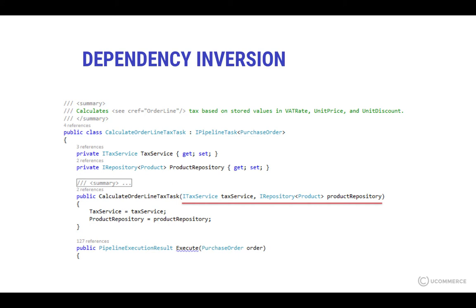We're using constructor injection to get that component into another class where it's required, and we're doing the same thing for data access. You can also use this principle in your own custom code. Once your own code is registered with uCommerce, you can start to inject services that you need in your code in the constructor, or via optional injection via properties.